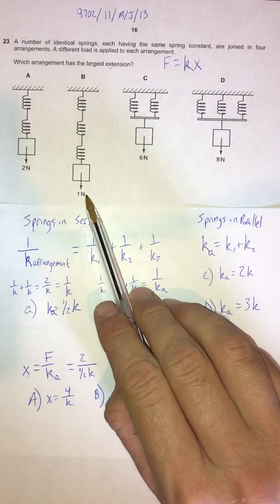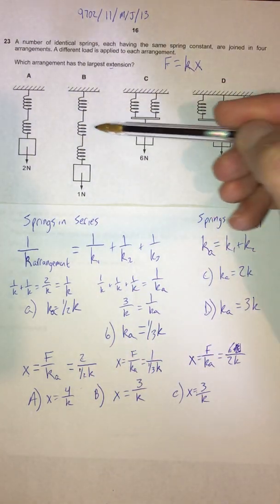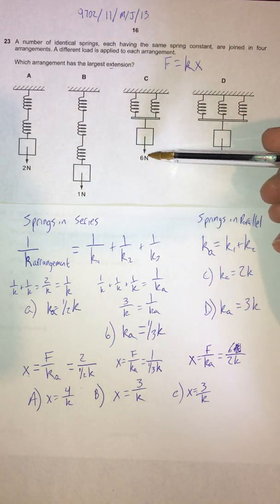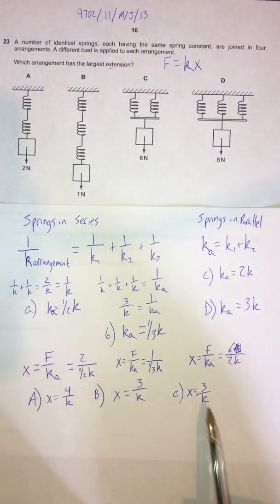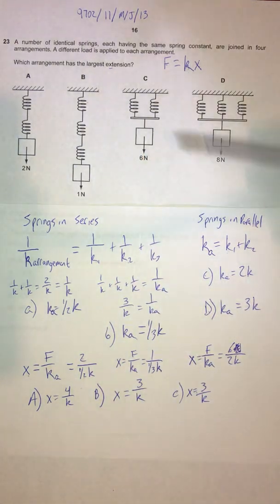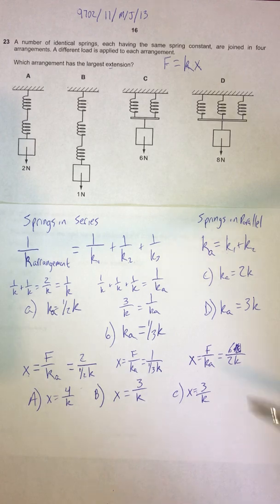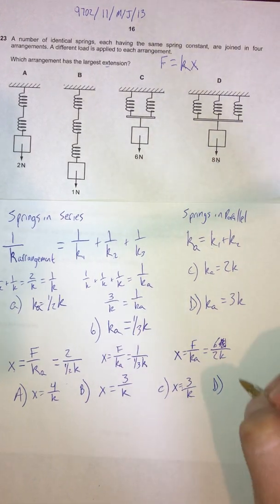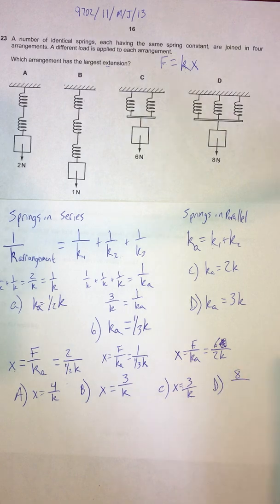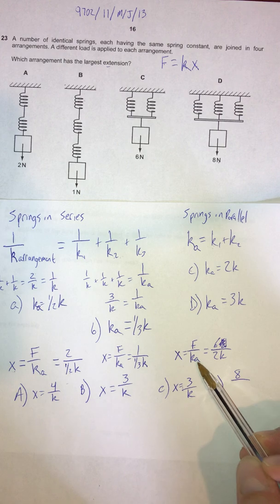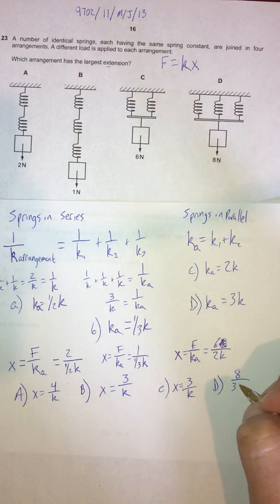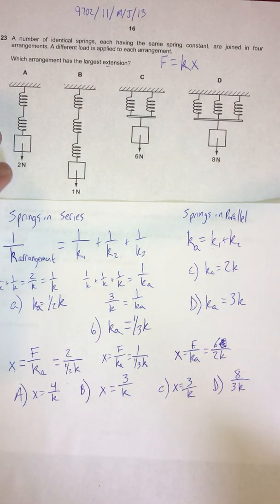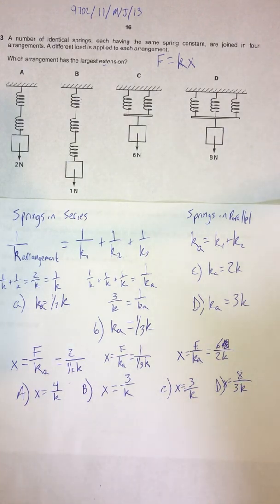So putting a 1 N force on three springs in series extends just as much as increasing that force six times with springs in parallel — not immediately obvious just by inspection. For choice D: force is 8 N, arrangement spring constant is 3k, so x = 8/3k. Substituting k = 1: A gives 4, B gives 3, C gives 3, and D gives 8/3 — still less than 4. So choice A has the largest extension.